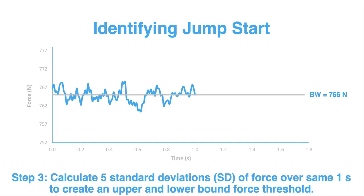To identify the jump start, we need to consider the standard deviation of the force over that same one second where the athlete was weighed. If you're using Excel — and I will show you how — you'd use equals STDEV, open bracket, select that one-second period, and hit enter. That gives us one standard deviation. We then multiply that by five to get a five standard deviation threshold. This gives us a robust bandwidth such that when the athlete is standing still, the force data will not surpass it — and it will only be surpassed when the athlete actually commences the jump.